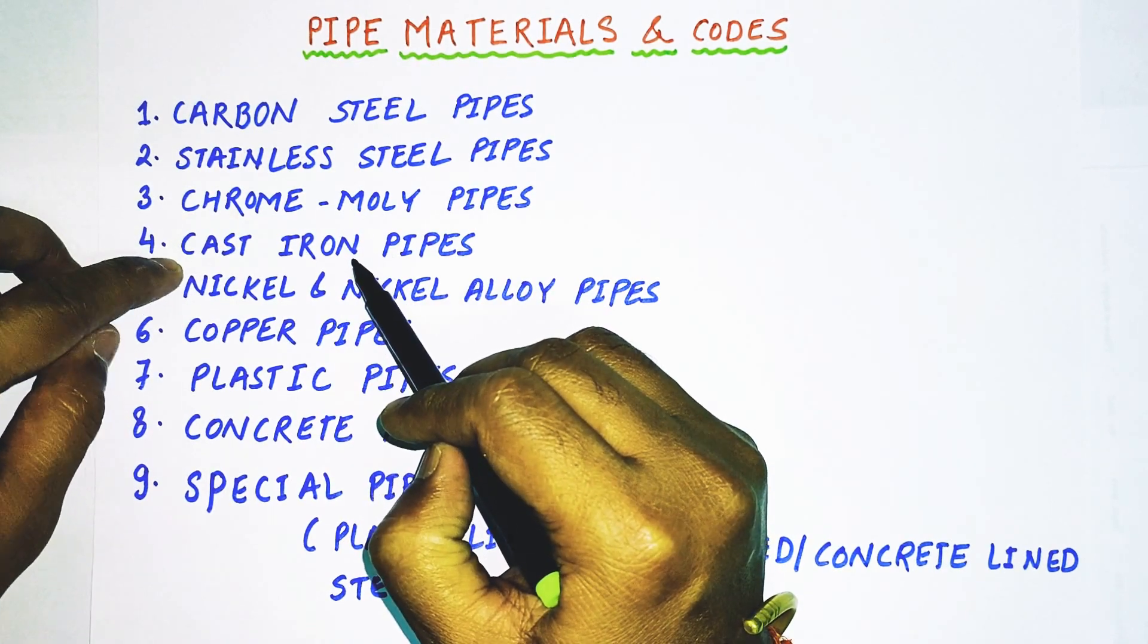After this we will learn about chrome molly pipes. These chrome molly pipes are very good for high temperature service. Actually these materials retain their tensile strength at high temperature, so that is why they are used in power plants and heat exchangers.